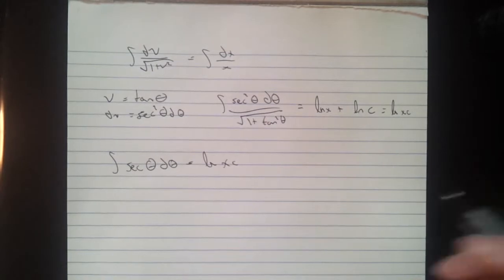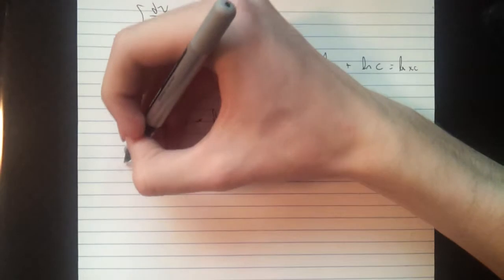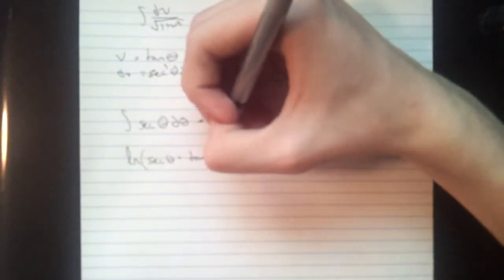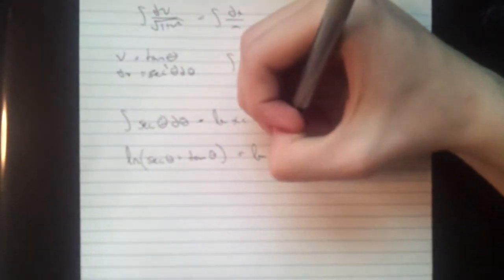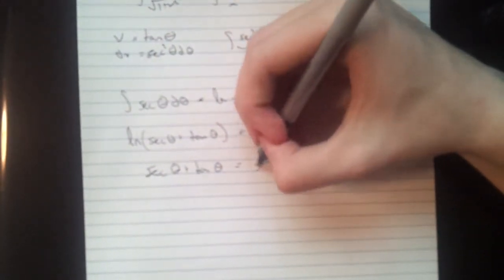And if you look that up in your book, or if you're very good and you can remember that, that integral is natural log of secant theta plus tan theta. Of course, natural log on both sides, the insides must be the same. Secant theta plus tan theta equals x times c. So this is your solution, but we have to get back in terms of x and y.